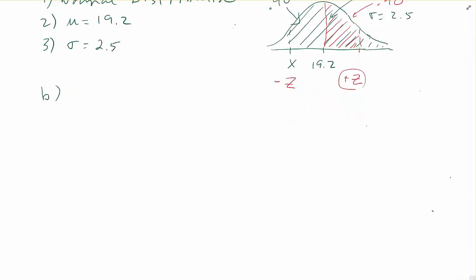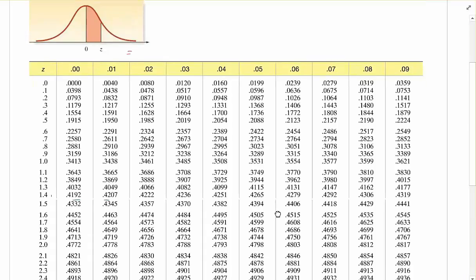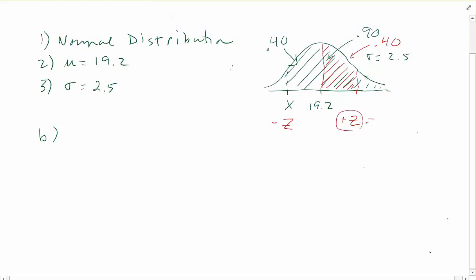So let's go to the table and see if we can get, see how close we can get to 0.40. And that looks like 0.3997 is as close as I can get to 0.4. That is in row 1.2 and in column 0.08, so 1.28 would be my Z value.